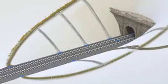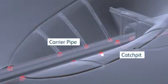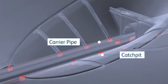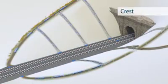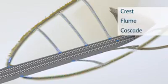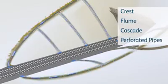Track drainage comprises a series of catch pits, generally 30 metres apart, connected by a series of filter or carrier pipes, usually located in both the SES and the 6 foot. Water enters the track drainage catch pits from the crest drains via flumes or cascade drains. Water can also enter through perforations in the track drainage pipes.